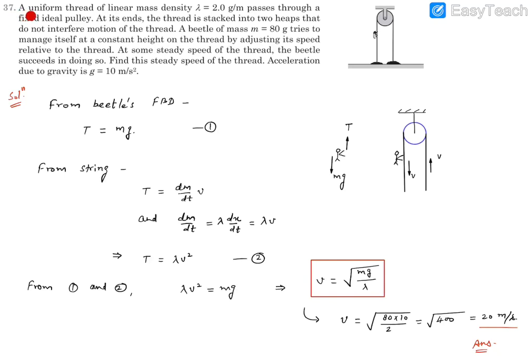Question 37. A uniform thread of linear mass density lambda, which is 2 gram per meter, passes through a